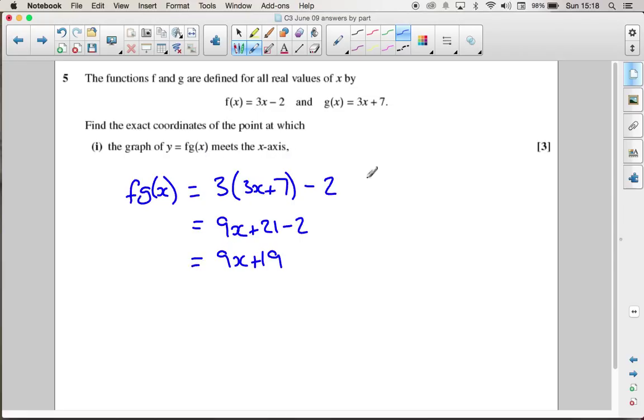And we want to know when this will meet the x-axis. It will meet the x-axis when y is 0. So I need to make f of g of x equal to 0. Just take away the 19 and divide by 9.